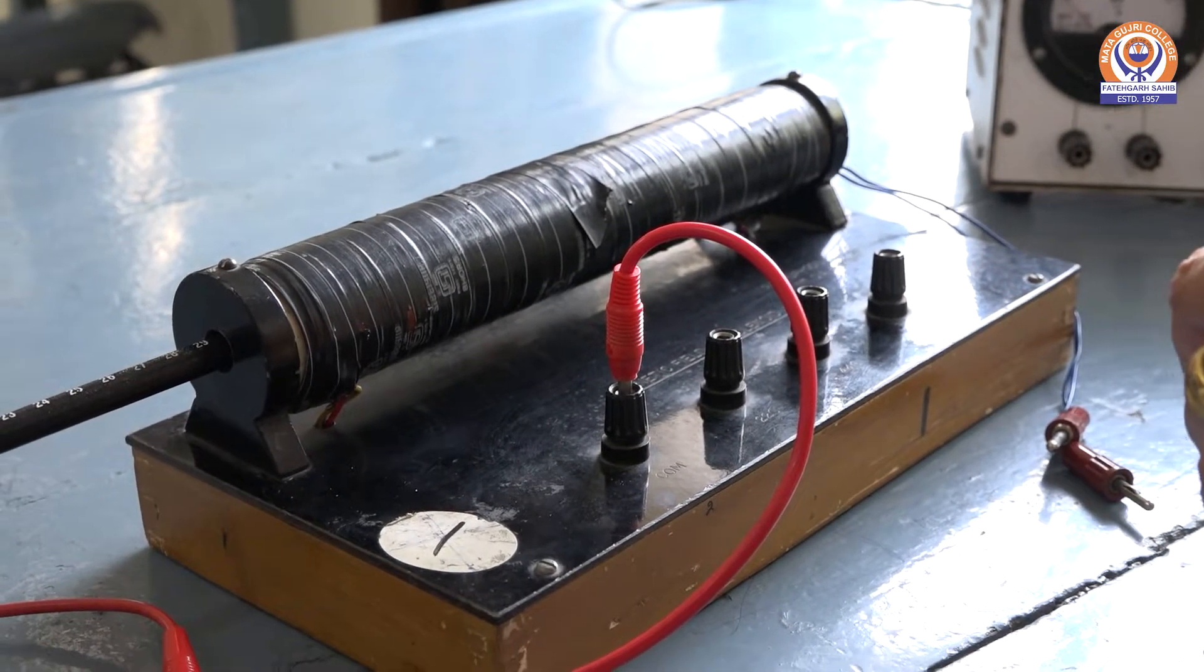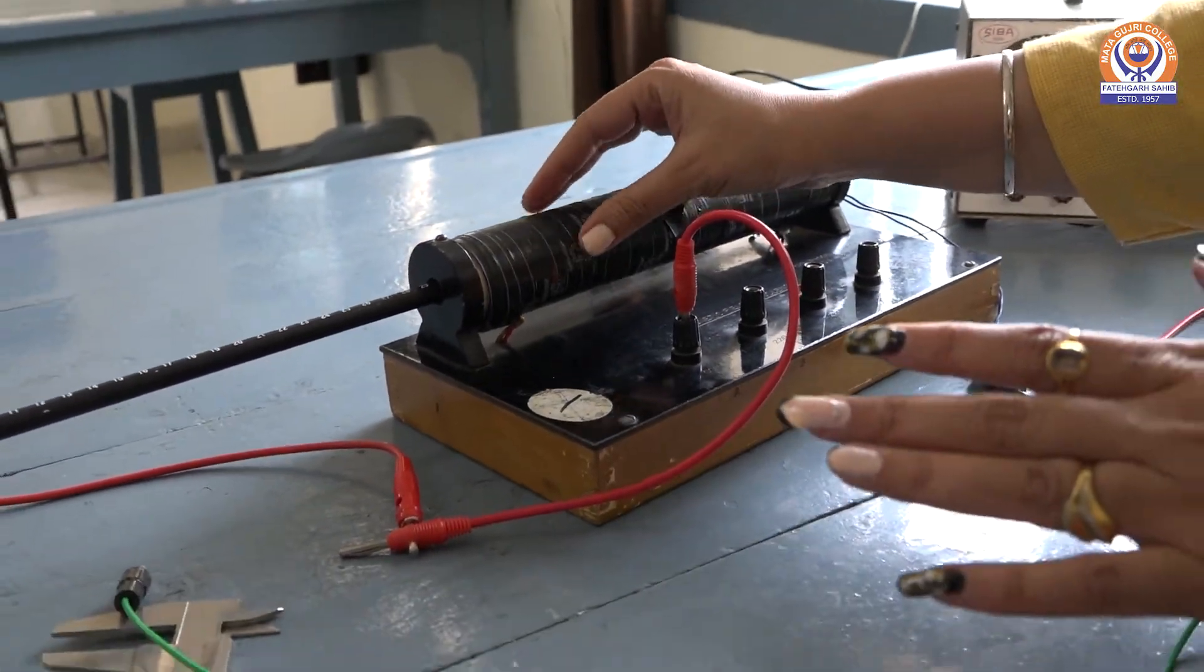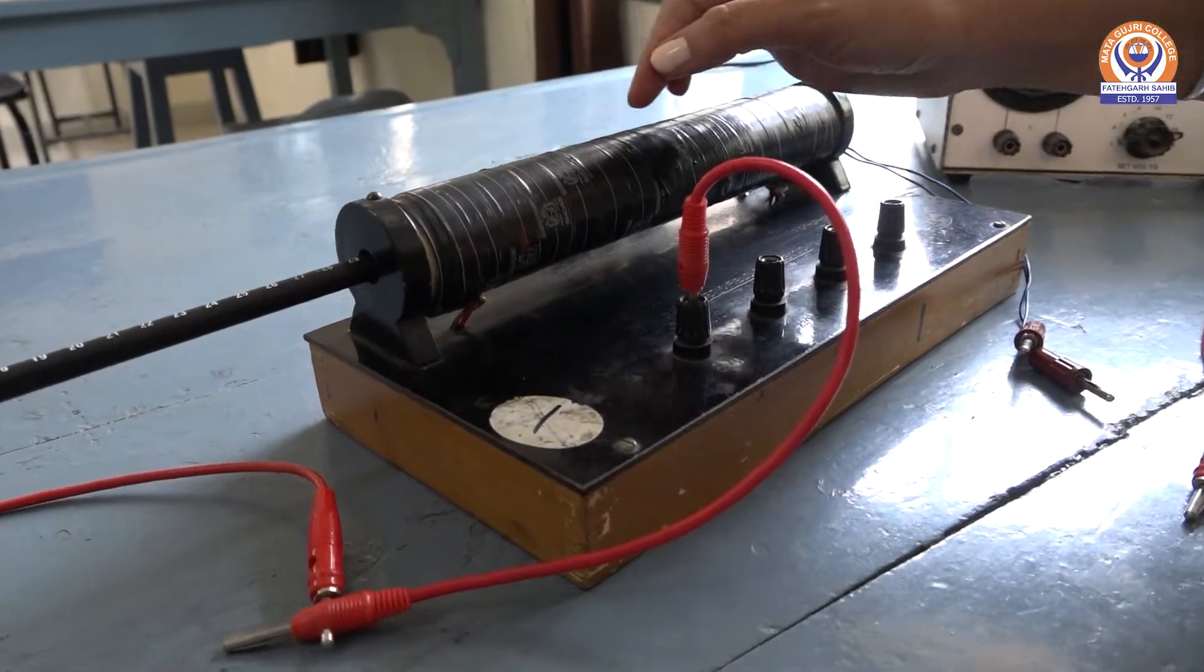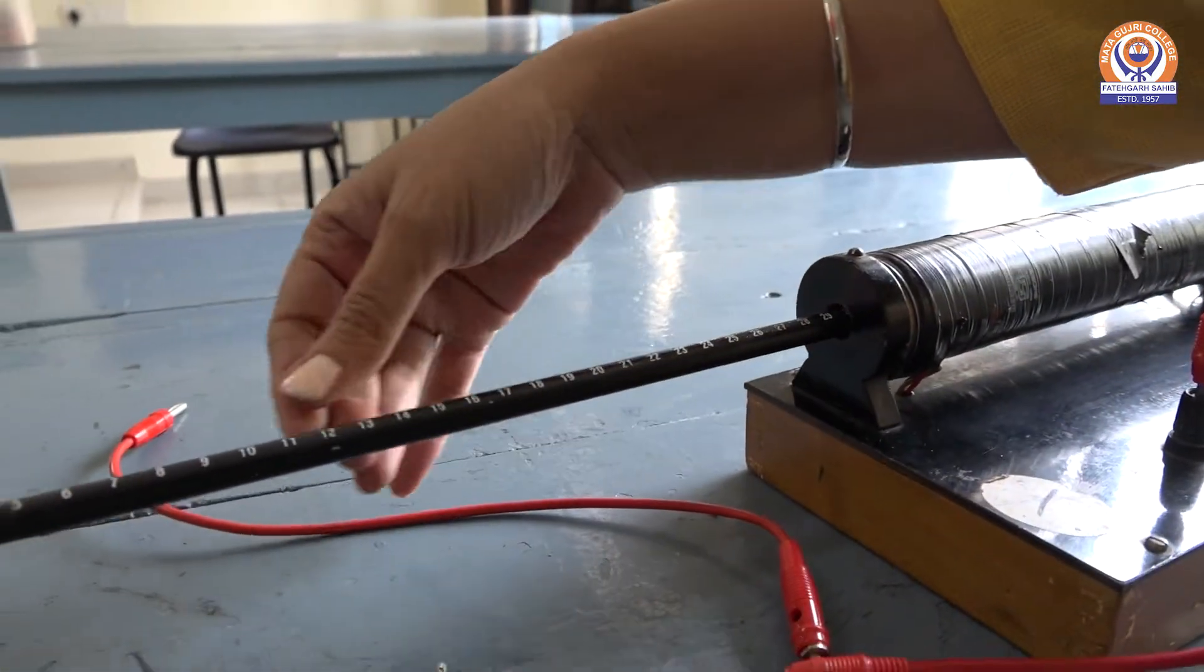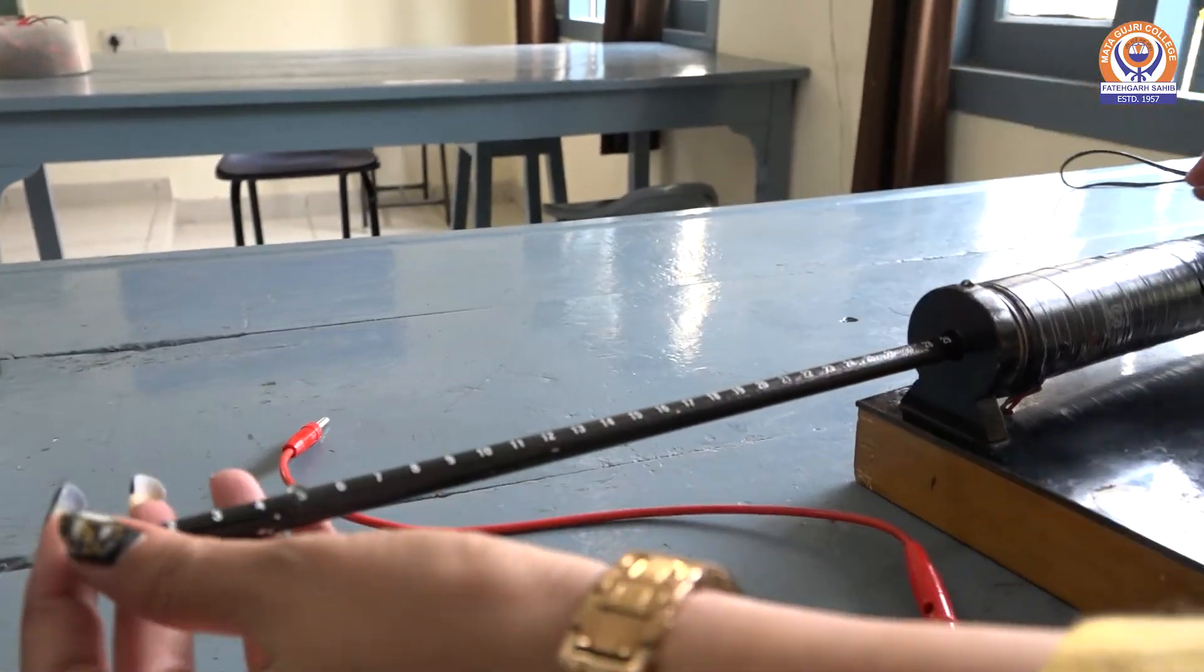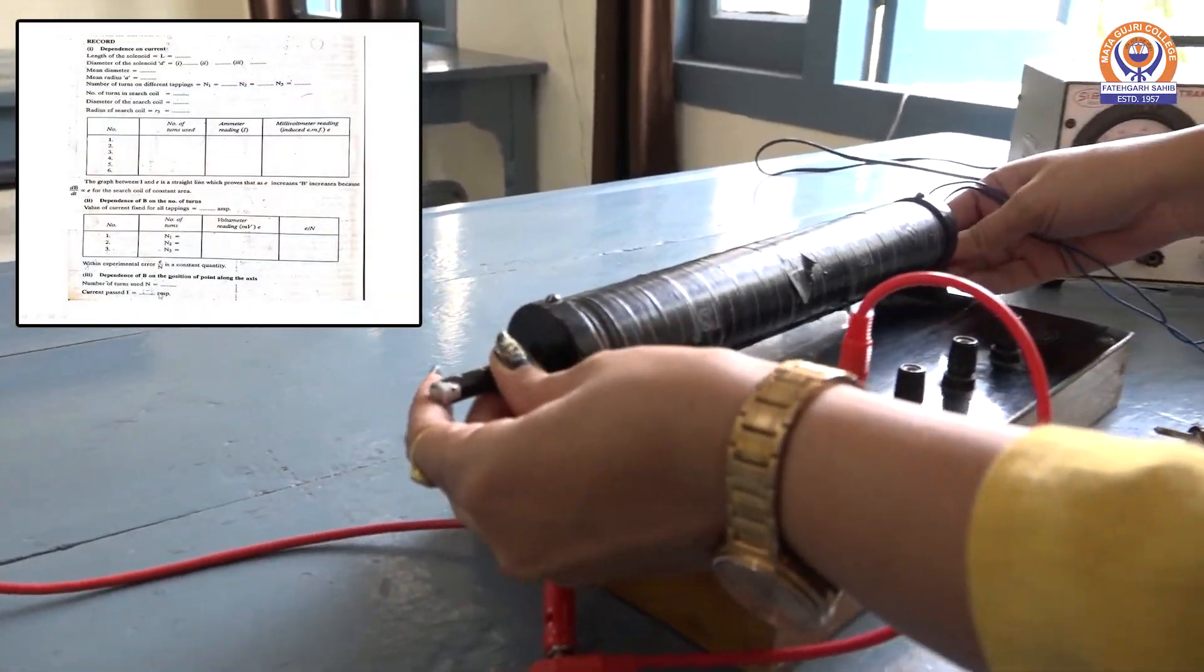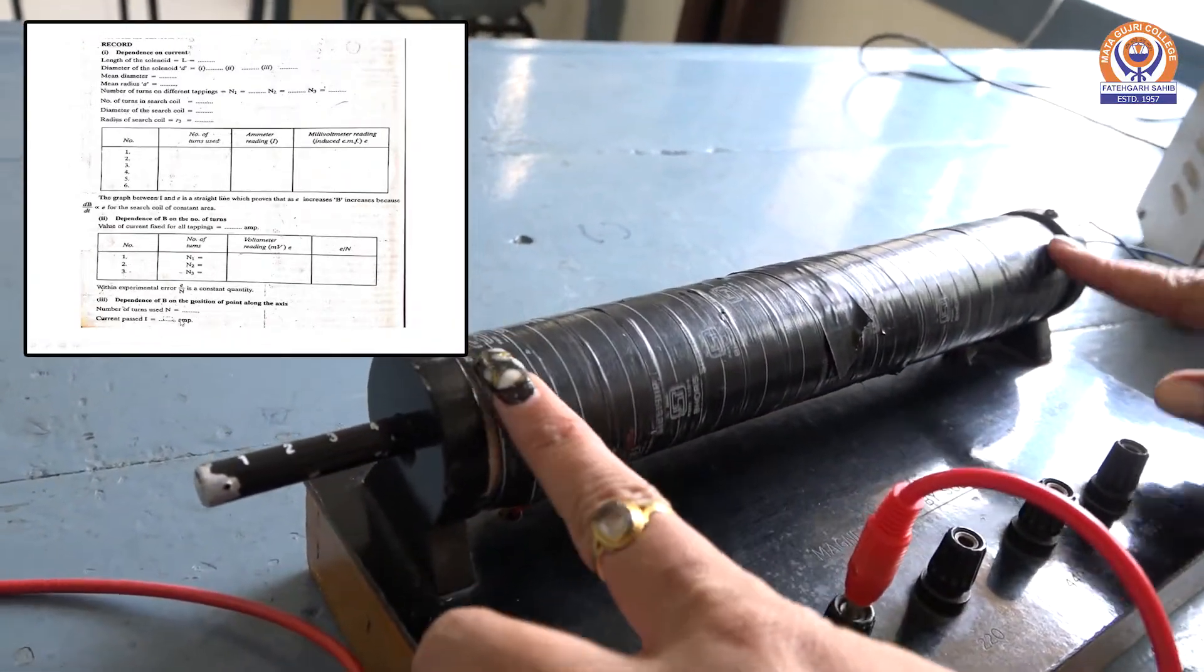To study the magnetic field due to solenoid, this is the apparatus used. This is the tape-bound solenoid in which insulated copper wire is wrapped over a core. And from this rod, we can see the length of this solenoid. Around 26 cm is the length L of the rod.